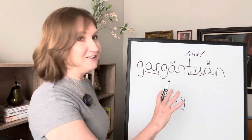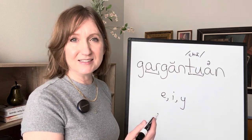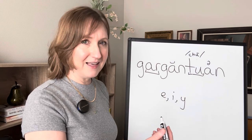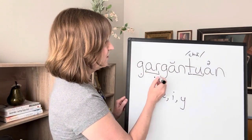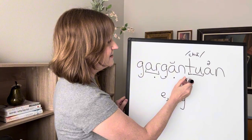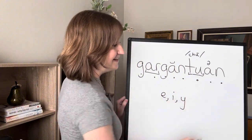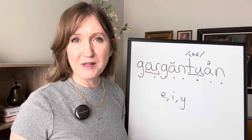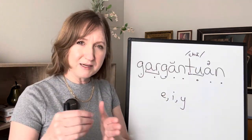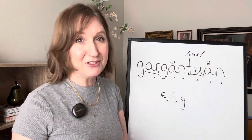Now we are ready to blend all of the sounds in this word. I'm going to dot each sound and then connect the dots slowly, all in one breath. It looks like this. Now I'm going to do what's called successive blending, which is where you blend just two chunks of sound at a time, going back to the beginning, starting again, and then grabbing the next sound. It looks like this.